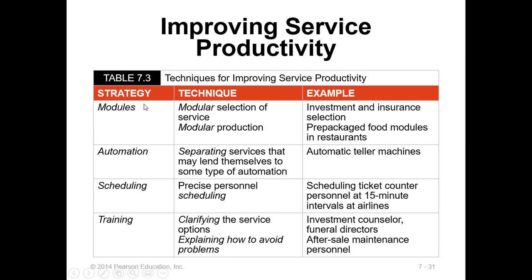Another interesting strategy is automation — separating services that lend themselves to automation, like ATMs (Automatic Teller Machines). We also have RFID systems where you show a top card to a library gate to check in. Scheduling is also important — precise personal scheduling like ticket countering in 15-minute slots at airports. Finally, training — clarifying service options and explaining how to avoid problems, such as for investment counselors, funeral directors, and after-sales maintenance personnel.